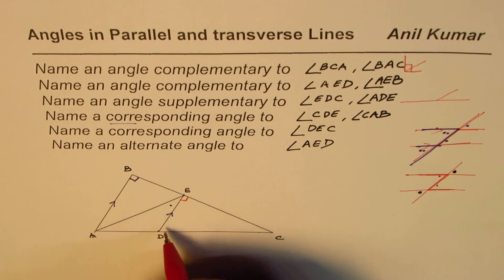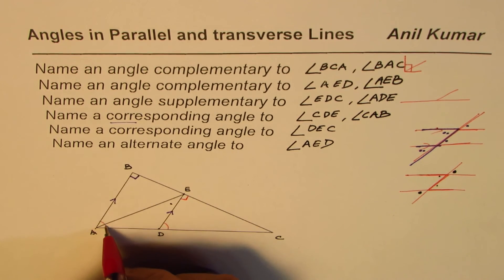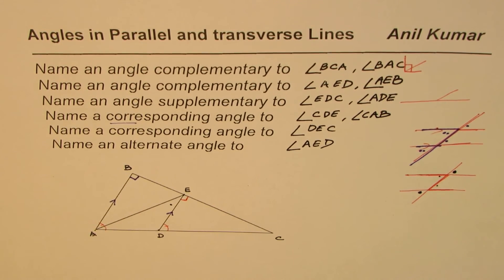So what we are saying is that CDE, that means this angle, and this whole angle, they will be equal. Is it okay? They are corresponding angles.